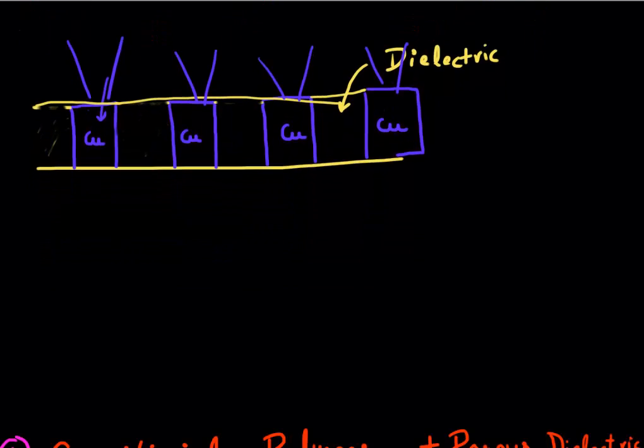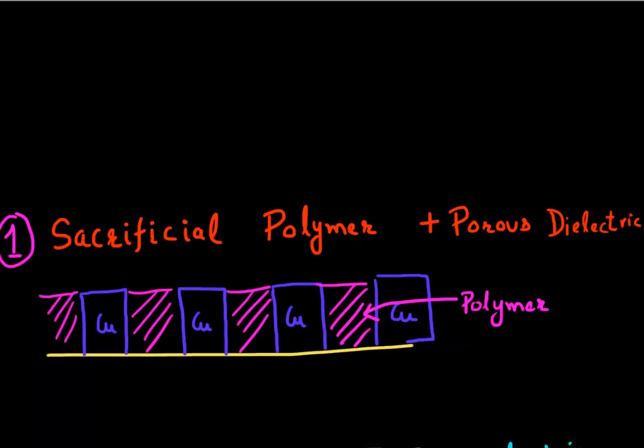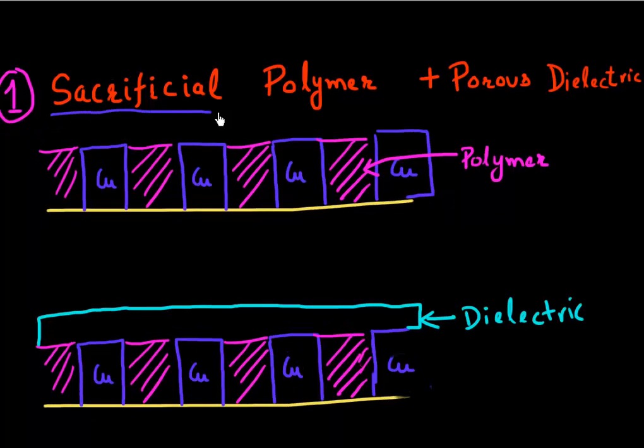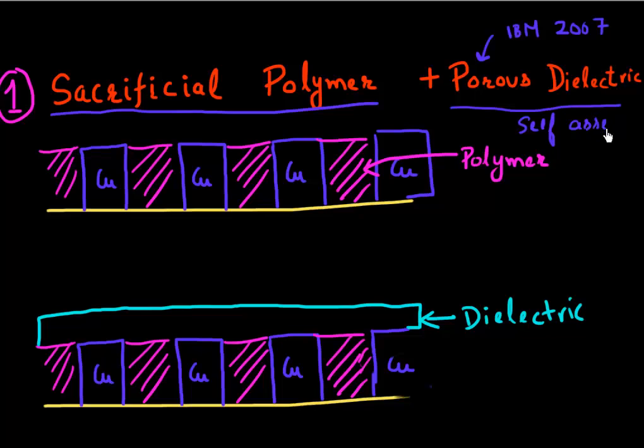I want to talk about three different ways of making these air gaps. The first one uses this approach which I'm labeling as using sacrificial polymer and porous dielectric. To give you some reference, this was an approach really publicized by IBM back in 2007 using their self-assembly to form this porous dielectric. The way this approach works is that you have these copper lines, and I clear up the dielectric between them. Now what I do is I fill it up with this polymer which I'll sacrifice, hence the name sacrificial polymer. I intend to not keep this but remove it.